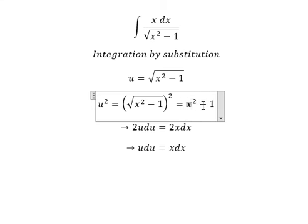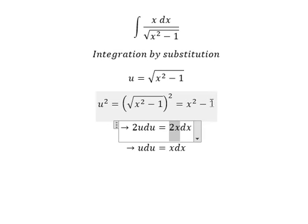Later that, we do the derivative of x square minus 1. The derivative of x square, you get 2x. The derivative of 1, you get 0. That's why you get 2u du equal to 2x dx.